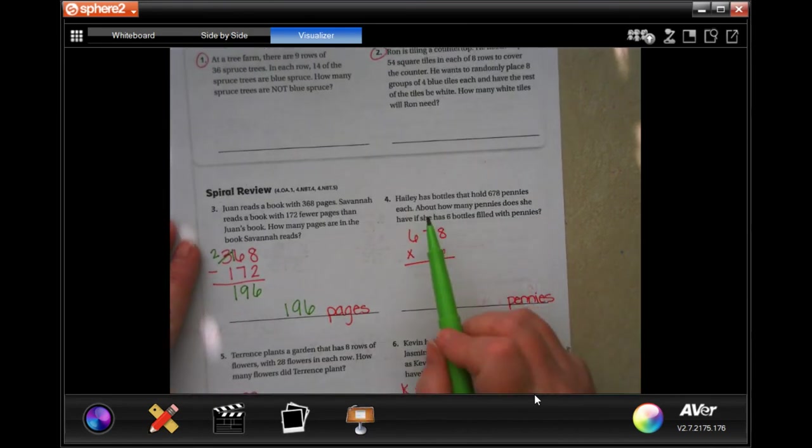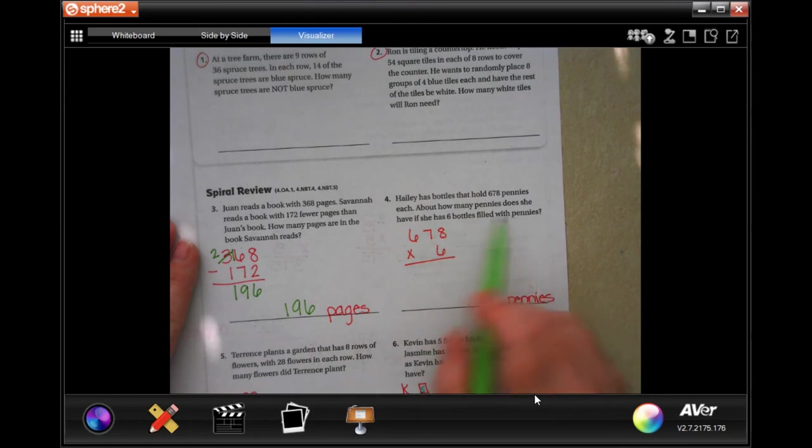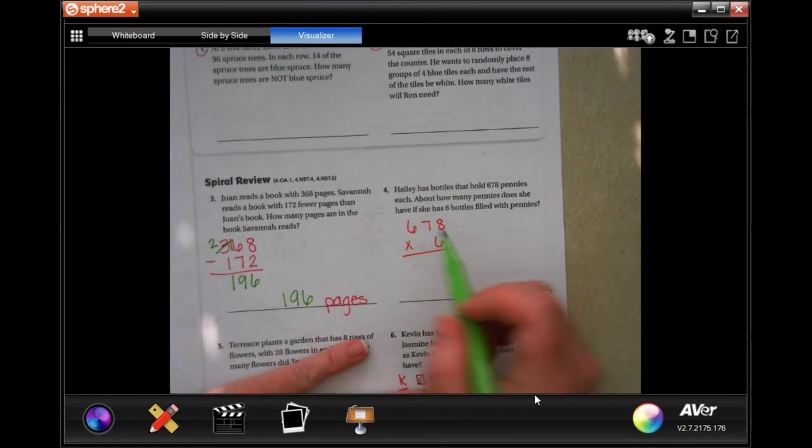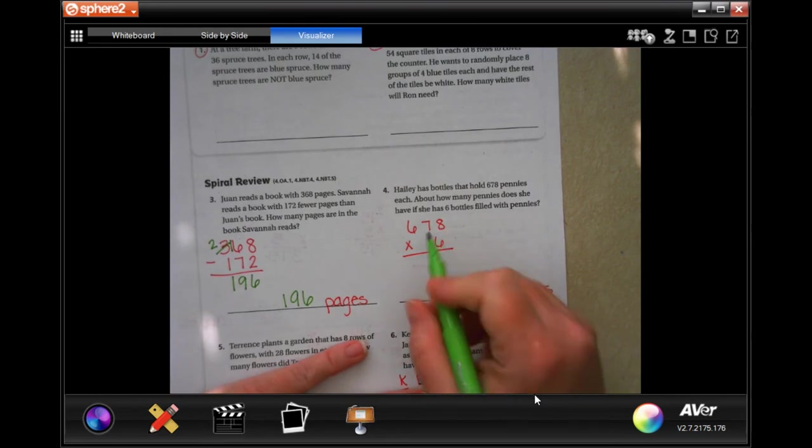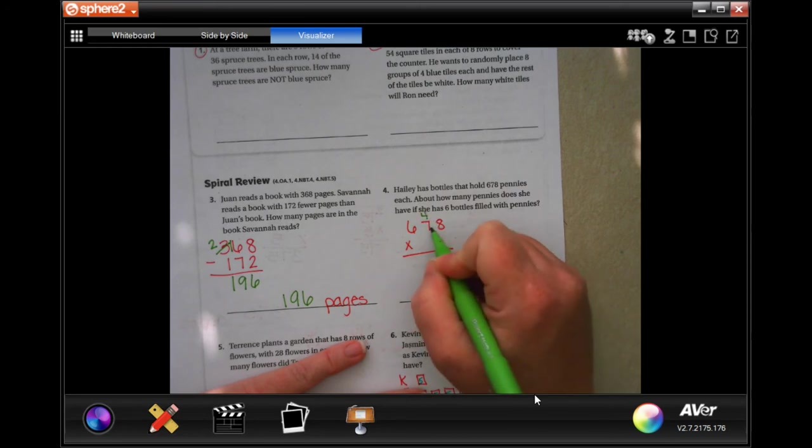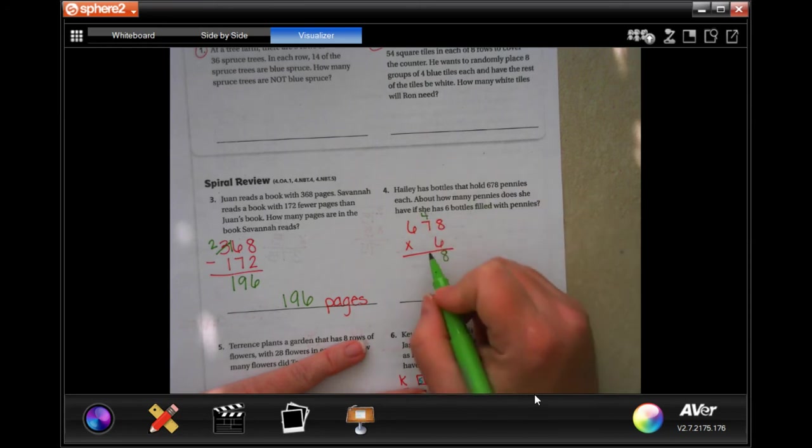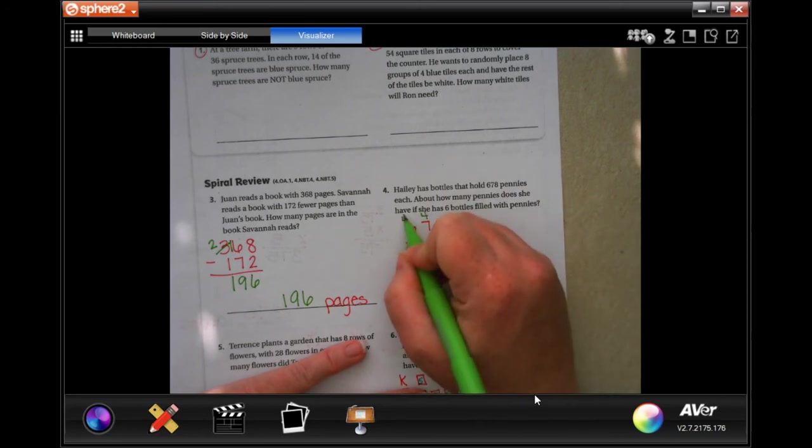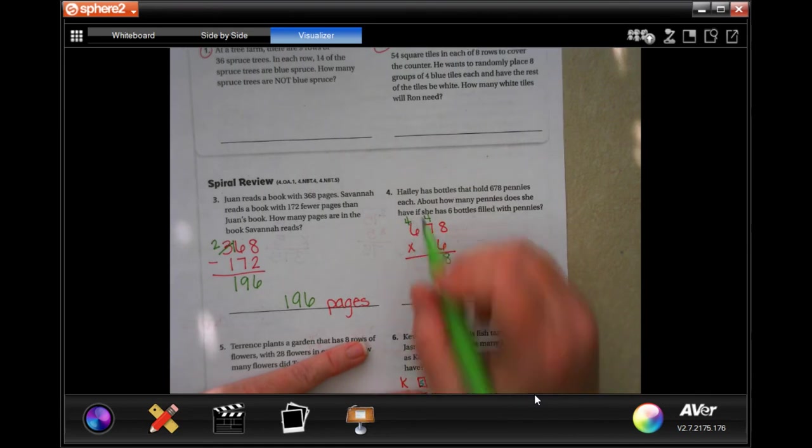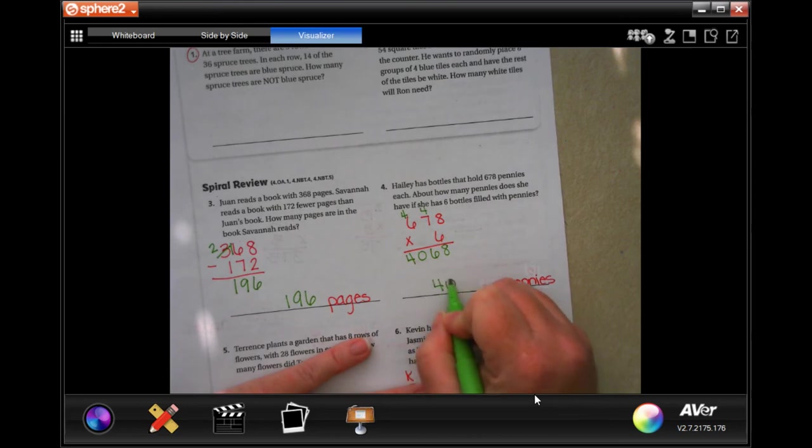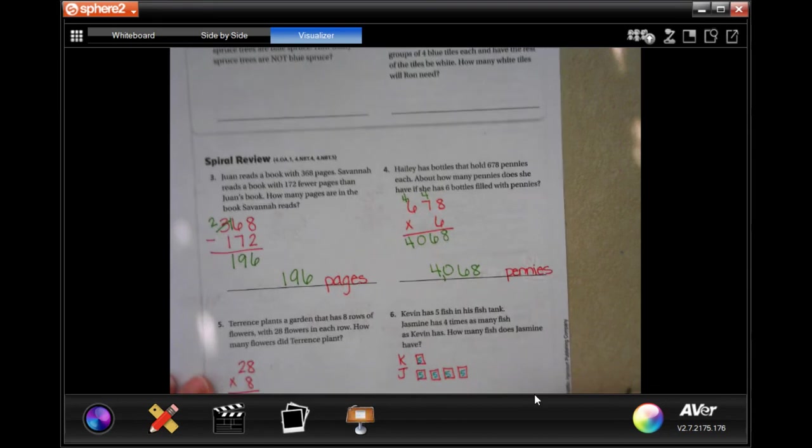Kaylee has bottles that hold 678 pennies each. How many pennies does she have if she has six bottles filled with pennies? So each bottle is that much. She has six of those. Let's do some math. Six times eight is 48. Six times seven is 42, plus four more is 46. Carry your four again. Six times six is 36, plus four, 40. Four thousand and sixty-eight pennies. Don't forget your label.